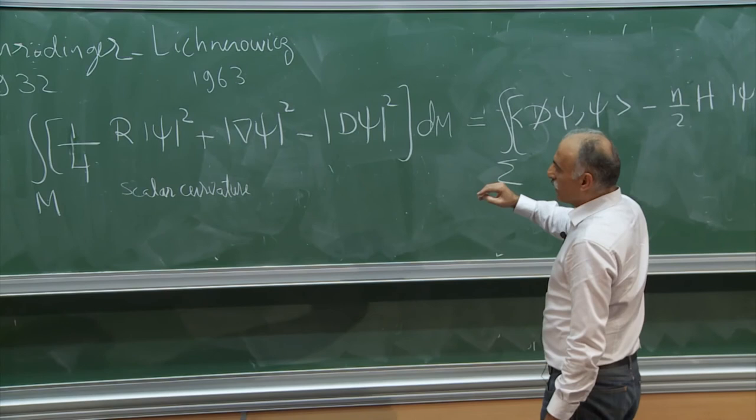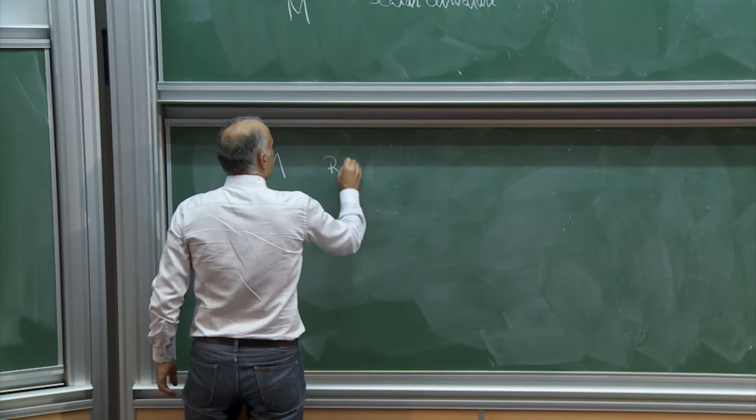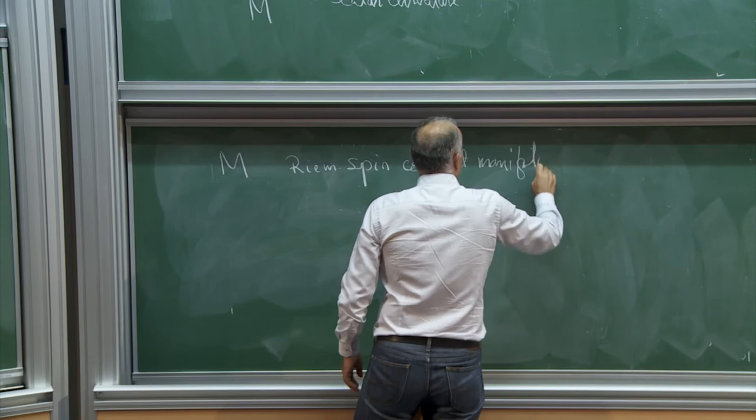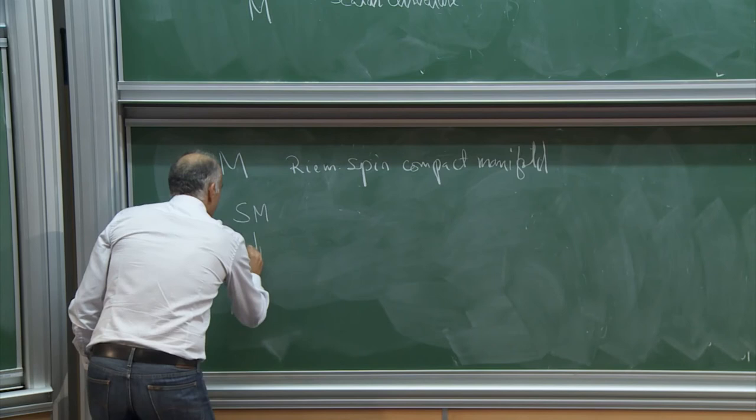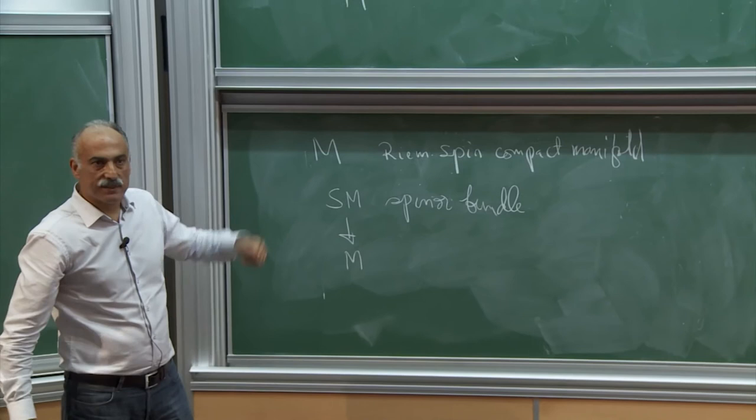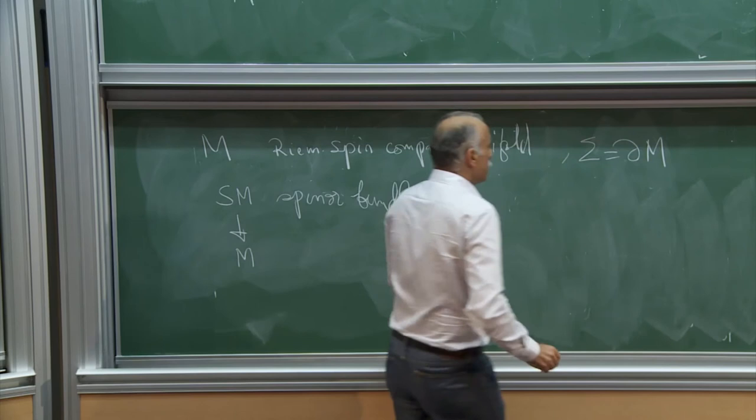So in fact, on a Riemannian manifold, if I take M to be, if I consider M to be a Riemannian spin compact manifold, then we have the spinor bundle SM. This is the spinor bundle. And the Dirac operator acts on sections of this spinor bundle. If we take now sigma and consider sigma to be the boundary of M.